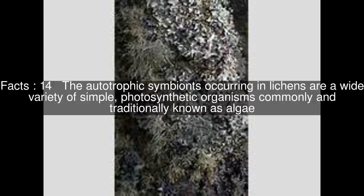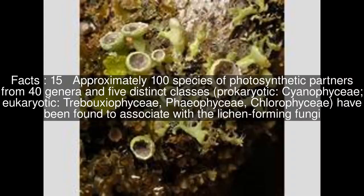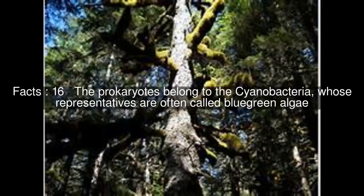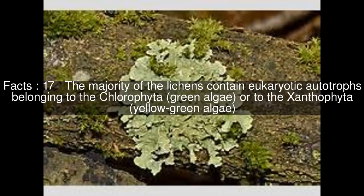The autotrophic symbionts occurring in lichens are a wide variety of simple photosynthetic organisms commonly and traditionally known as algae. Approximately 100 species of photosynthetic partners from four genera and five distinct classes — prokaryotic cyanophyceae; eukaryotic trebouxiophyceae, phaeophyceae, and chlorophyceae — have been found to associate with lichen-forming fungi. The prokaryotes belong to the cyanobacteria, whose representatives are often called blue-green algae. The majority of lichens contain eukaryotic autotrophs belonging to the Chlorophyta, green algae, or to the Xanthophyta, yellow-green algae.